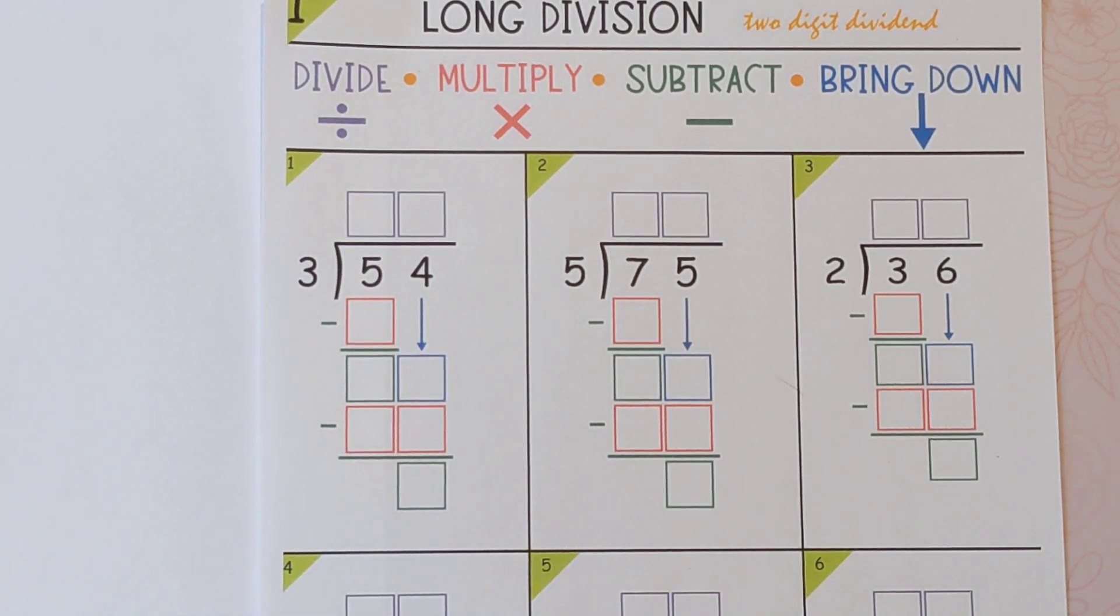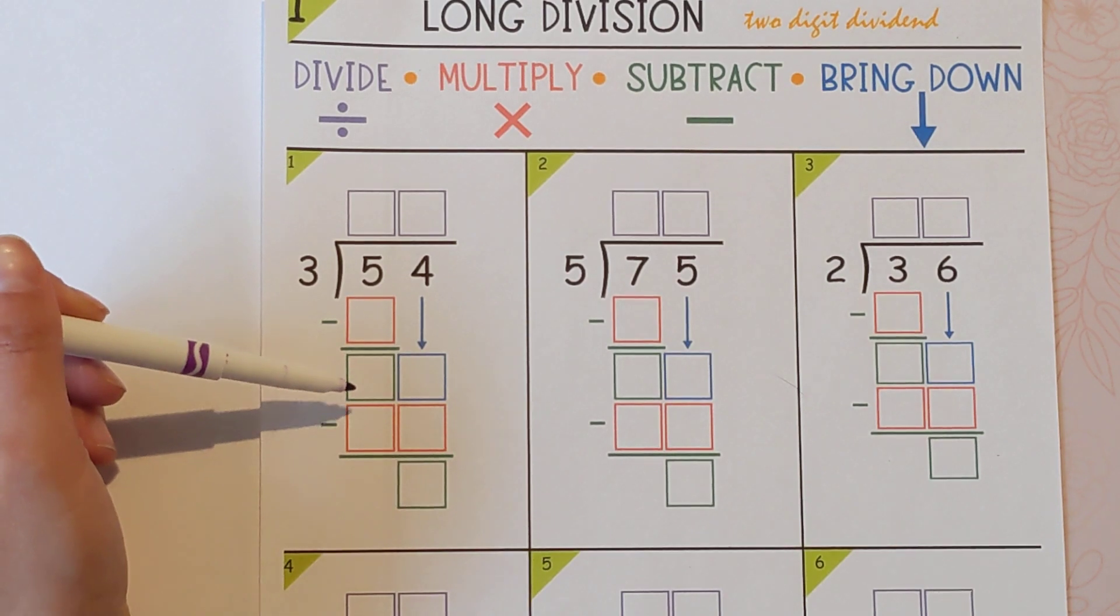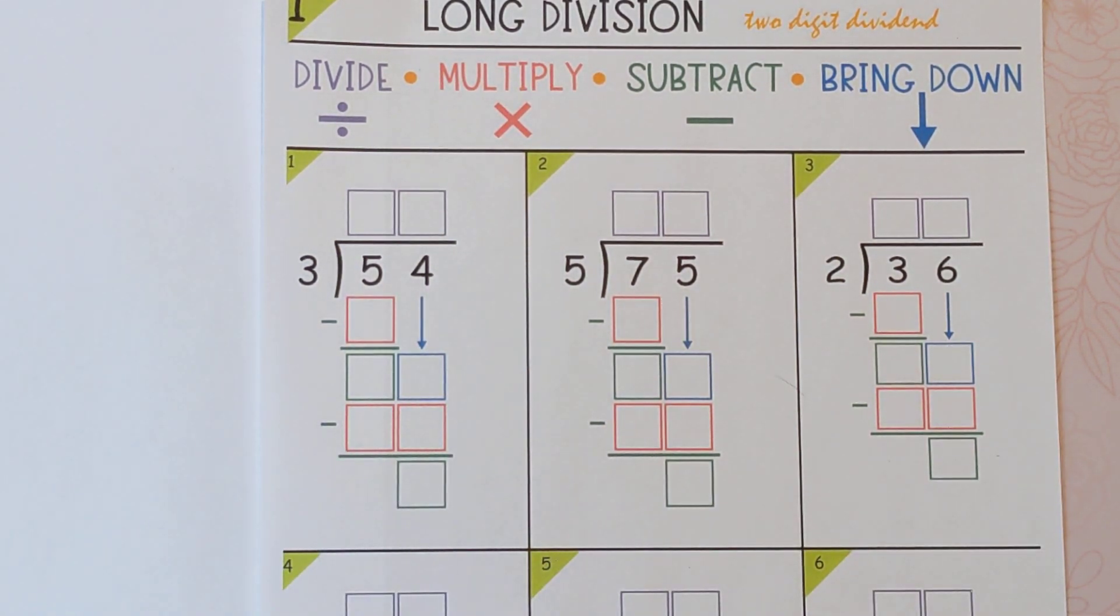But we're still doing this column first and then that column. So we're going to just do one step at a time and we're going to use the colors to help us. So purple, red, green, blue, and so on and so forth.